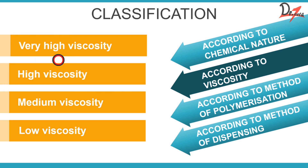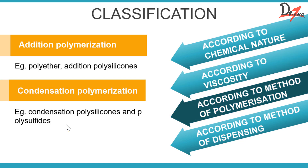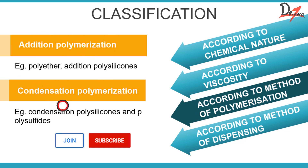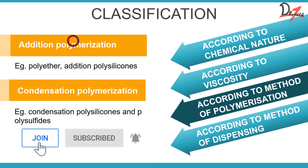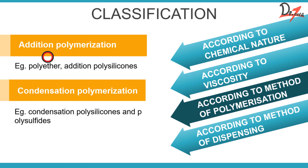According to viscosity, we have very high viscosity, high viscosity, medium viscosity, and low viscosity. According to method of polymerization, we have either addition polymerization or condensation polymerization. For example, polyether and addition polysilicones have addition polymerization, while condensation polysilicone, as the name says, has condensation polymerization, and so does polysulfide.